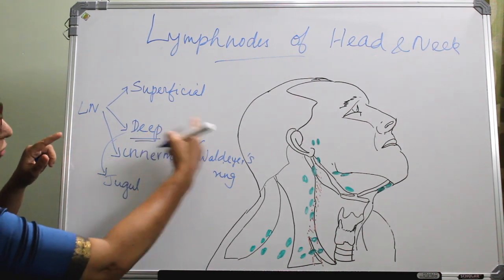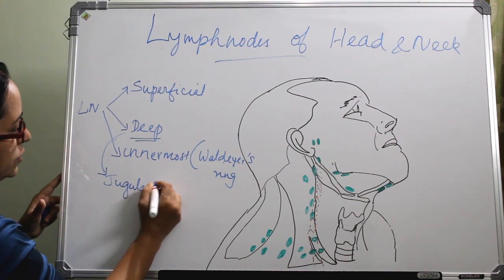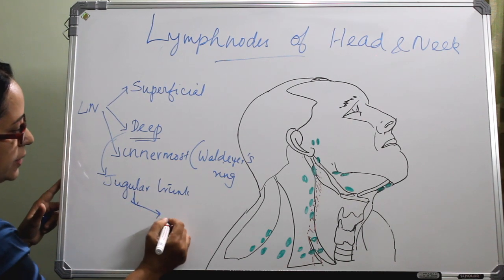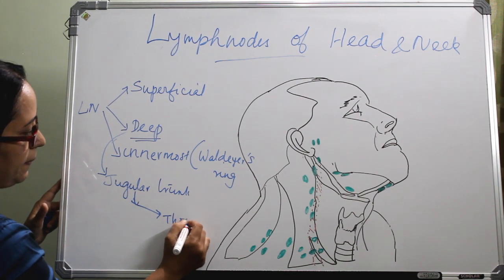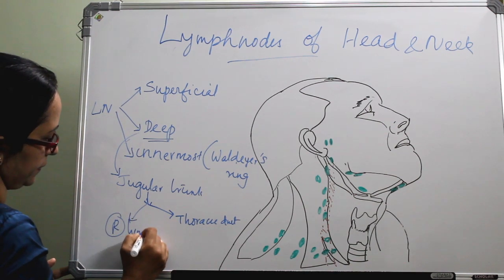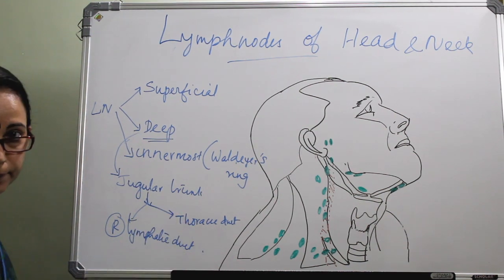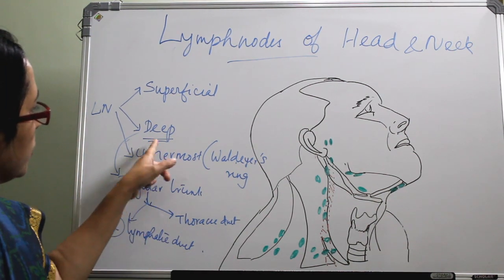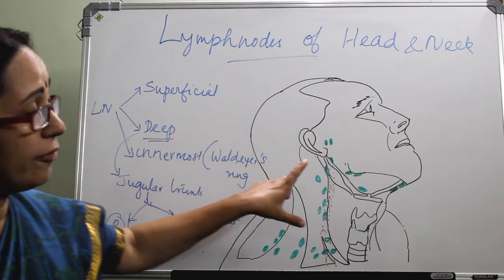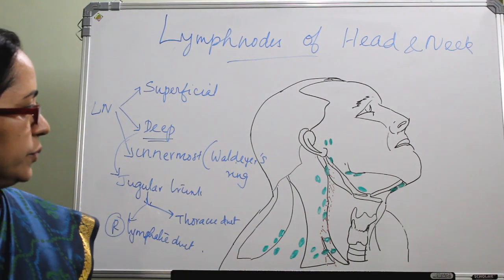The efferent from the deep nodes forms the jugular trunk. Afferents come from all the areas of the head and neck, and the efferent goes via the jugular trunk, draining to the left thoracic duct and right lymphatic duct. The different groups of deep lymph nodes receive afferents from various areas.